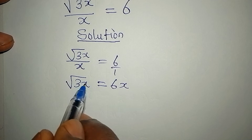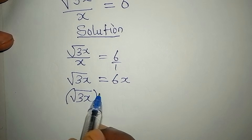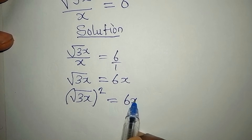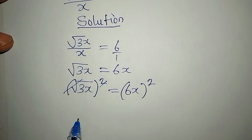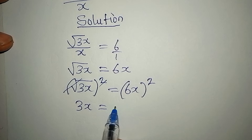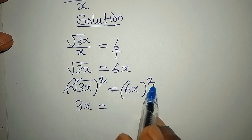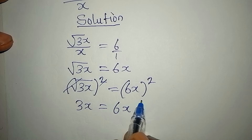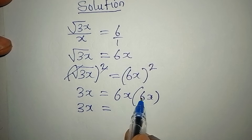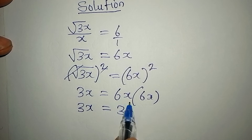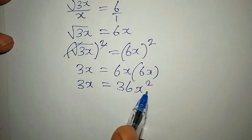Now let's remove the square root by squaring both sides. We have 6x to the power of 2 — the square root and square cancel — giving us 3x equal to 6x squared. Note that 6x in brackets to the power of 2 is 6x multiplied by 6x, so we have 3x equal to 36x squared.